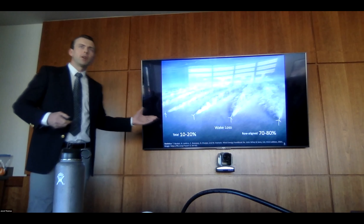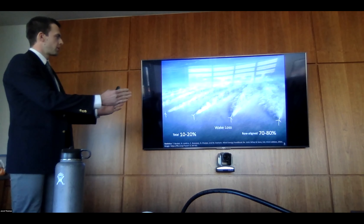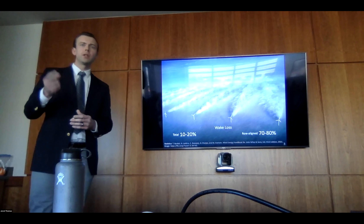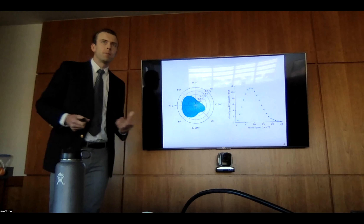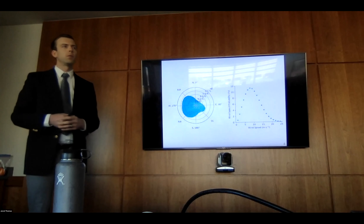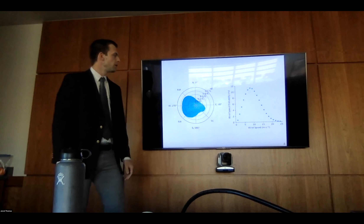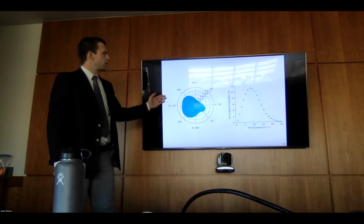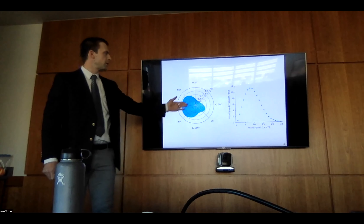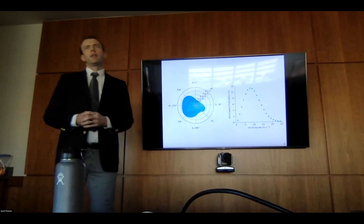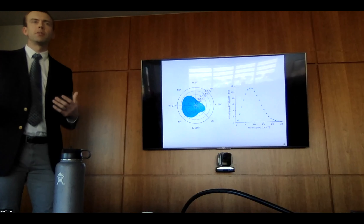This would be a simple problem if all we had was wind from a single direction — we'd just move the turbines to the side and be done. But wind comes from any given direction, with varying probability and varying wind speed. Here we have a wind rose and a wind speed distribution that follows a Weibull distribution, with 360 wind directions accounted for, each with a varying probability. This becomes a much more complicated problem where we need to balance the energy produced in each direction.